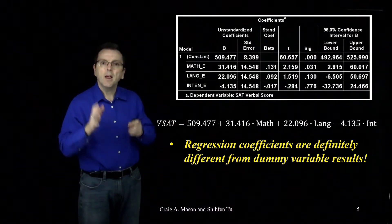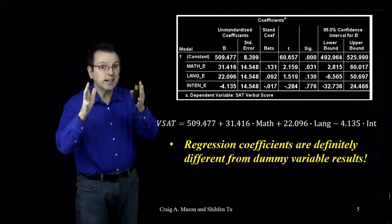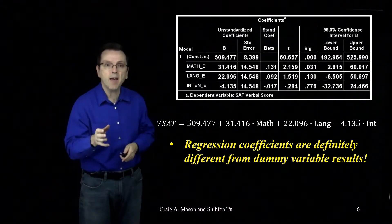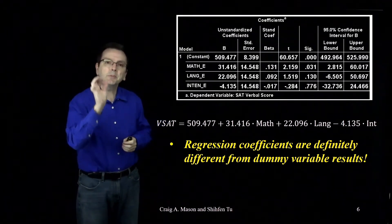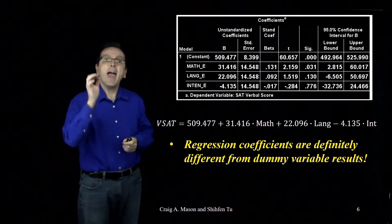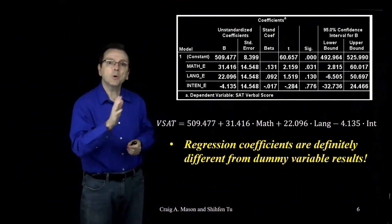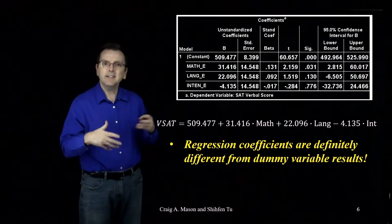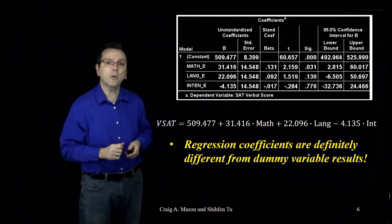The overall effect for the three effect codes as a set is the same — they're still examining type of curriculum. But the specific comparisons that the individual coefficients are making have changed. You can think of it as the individual coefficients in effect coding asking different types of questions than the individual coefficients in dummy coding.